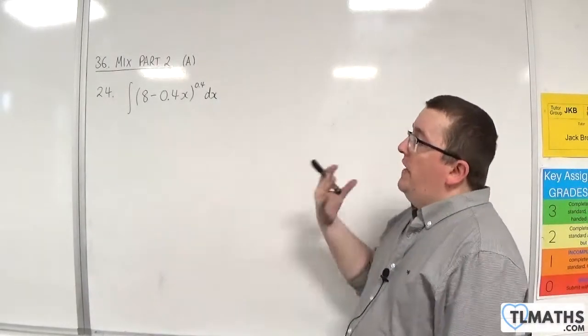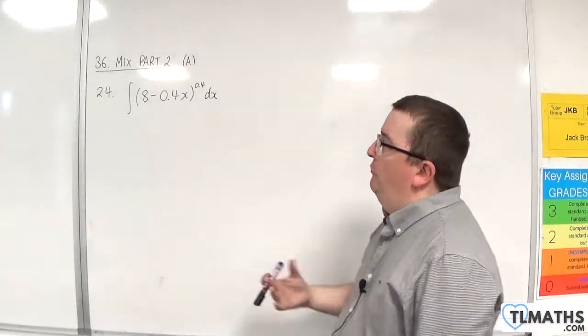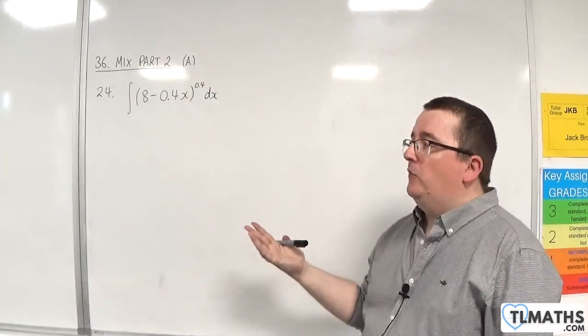This is question number 24. We have the integral of 8 take away 0.4x to the power of 0.4, integrating that with respect to x.